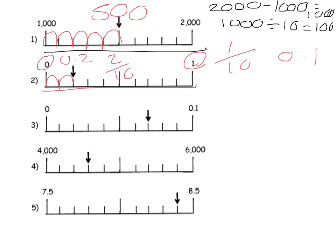Next one. This time the whole thing is worth 0.1 and there are 10 jumps. So it's a tenth divided by 10, which gives us a hundredth. So each one is worth a hundredth. So I've got one hundredth, two hundredths, three hundredths, four hundredths, five hundredths, six hundredths, seven hundredths — which would be 0.07.